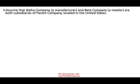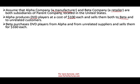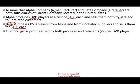The best way to illustrate this is to work with examples. Assume Alpha Company is a manufacturer and Beta Company is a retailer — Alpha sells to Beta, and Beta sells to the consumer. Alpha produces DVD players at a cost of $100 and sells them to Beta and unrelated parties. Beta purchases DVD players from Alpha and unrelated suppliers and sells them for $160, making the total gross profit for the company $60.